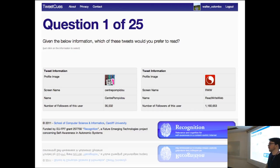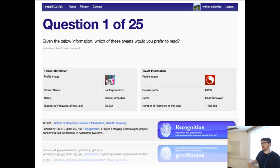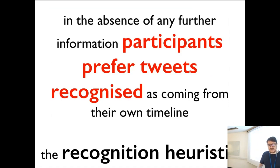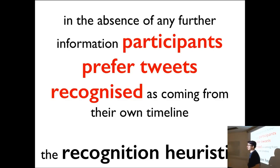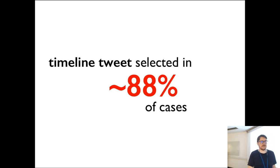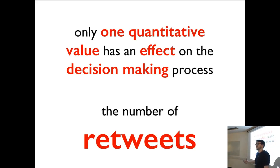We put the experiment online, ran one round releasing it into the wild and getting people to tweet about it, then repeated it paying people through Mechanical Turk and Crowdflower to get a larger dataset. The results between the two data sets were very similar. In the absence of any other information, the recognition heuristic does seem to apply — people go for what they recognize. Show a tweet from your friend Dave versus a stranger's tweet: people go for Dave about 88% of the time, which is quite a large preference.